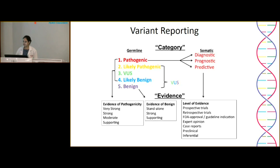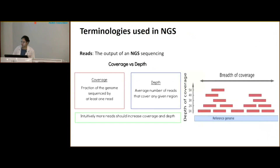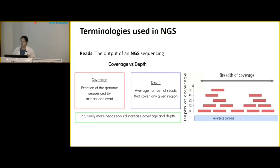Two commonly used terms in NGS reports are coverage and depth. Coverage is the fraction of the genome sequenced by at least one read. Average depth is the average number of reads covering any given region. Horizontally, coverage refers to the sequence stretch covered by different reads; depth is the vertical measure of how many times a region has been read. For exome sequencing, 90x or 100x depth gives confident data. Variants with depth less than 25 should be interpreted cautiously and Sanger validation requested.